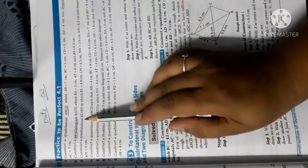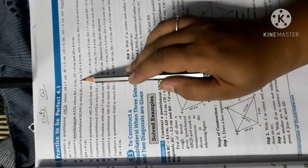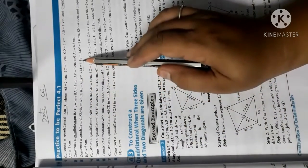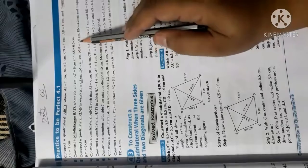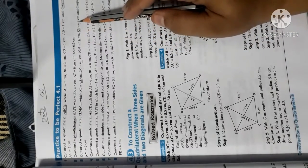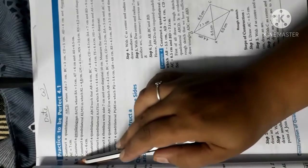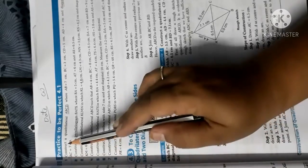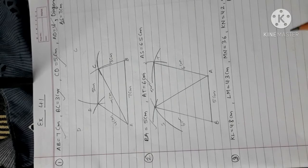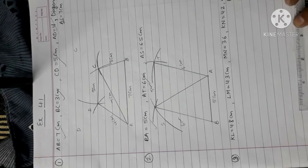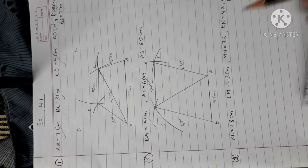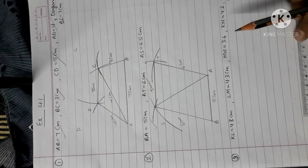Now question number 3. Construct a quadrilateral KLMN in which KL equals to 4.8 cm, LM equals to 4.3 cm, MN equals to 3.6 cm, KN equals to 4.2 cm, and diagonal KM equals to 6 cm. It is a similar question to question number 1. So start the question — first of all, make here KL equals to 4.8 cm.